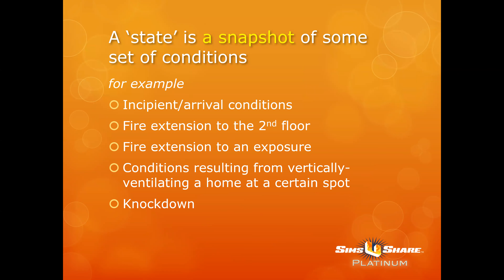As a snapshot of a set of conditions, here's some more examples. The incipient arrival condition might be smoke and fire showing out of the alpha and Charlie side — that still is the current state. Fire extension to the second floor, another state. Fire extension to exposure — these are all different states.